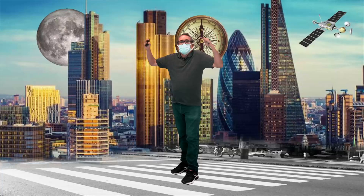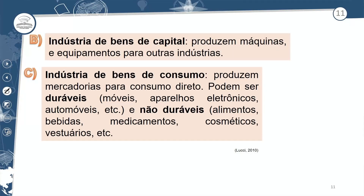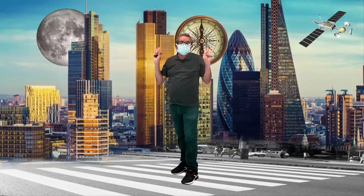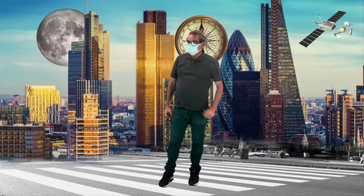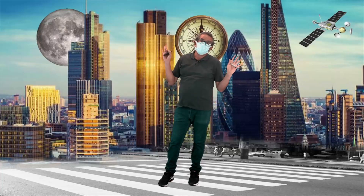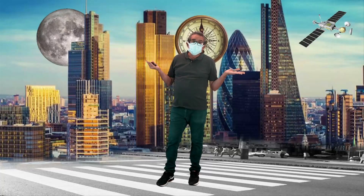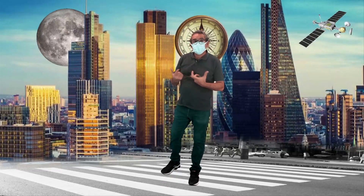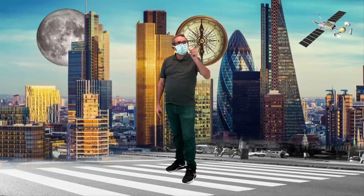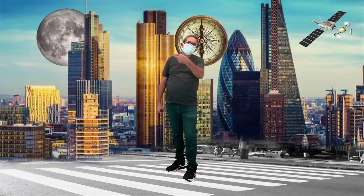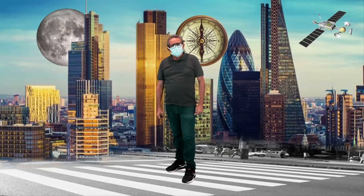Nós podemos pensar o que é indústria de bens duráveis e não duráveis. Quando eu falo de duráveis, é aquela que leva um tempo longo para se destruir — como um carro, que tem possibilidade de durar muito tempo. Quando eu falo de não duráveis, um litro de refrigerante, quando aberto, se você não tomar logo, não vai prestar mais. Alimentos estragam, medicamentos têm prazo de validade. O automóvel não tem prazo de validade. Portanto, eu tenho bens duráveis e não duráveis.